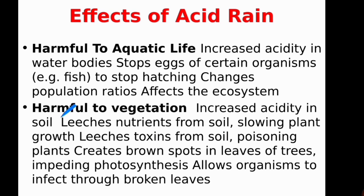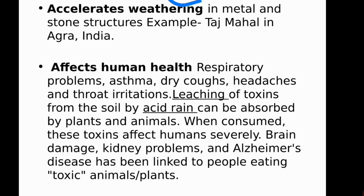Acid rain is also harmful to vegetation. It increases soil acidity and can directly affect tree leaves by creating brown spots, affecting photosynthesis. When photosynthesis is affected, herbivorous organisms dependent on vegetation are also indirectly affected. Additionally, acid rain accelerates the weathering process of metals and stone structures like the Taj Mahal.